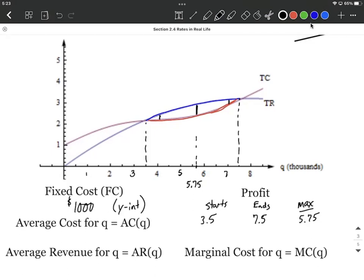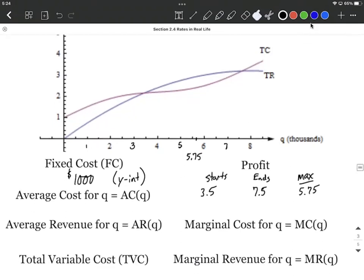All right, next up, marginal cost. Remember, we've referred to this in a few videos. Marginal indicates the same thing as, whenever we hear marginal, we want to be thinking that's the slope of a tangent line. So slopes of tangent lines represent the marginal cost. Slopes of tangent lines are also the same thing, except for tangent lines to the revenue function.